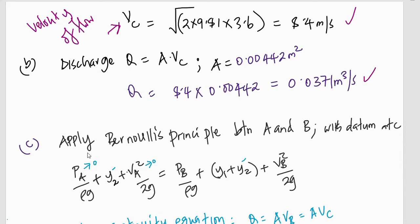Part C of this question, we want to determine the pressure at point B, given that actually we are to determine the absolute pressure, given that the atmospheric pressure is 10. So, if we apply Bernoulli's principle between A and B with the datum at C, it means P_A out of rho G plus y_2 plus V_A squared out of 2G is equal to P_B out of rho G plus Y_1 plus V_B squared out of 2G. This is the datum energy above datum at C.